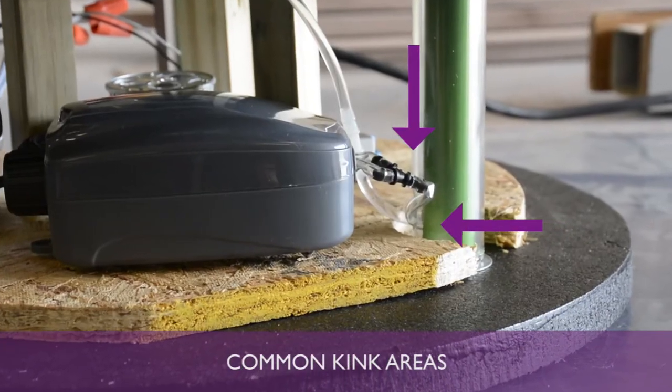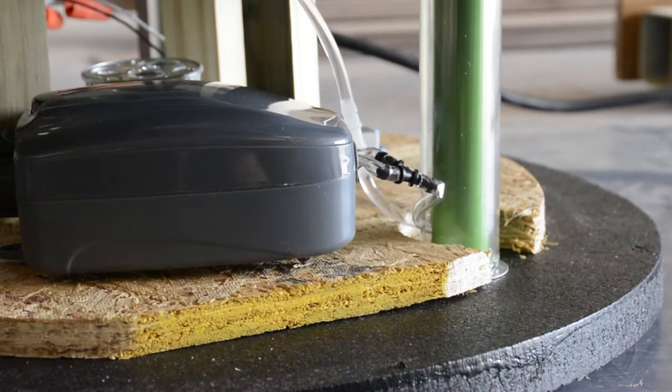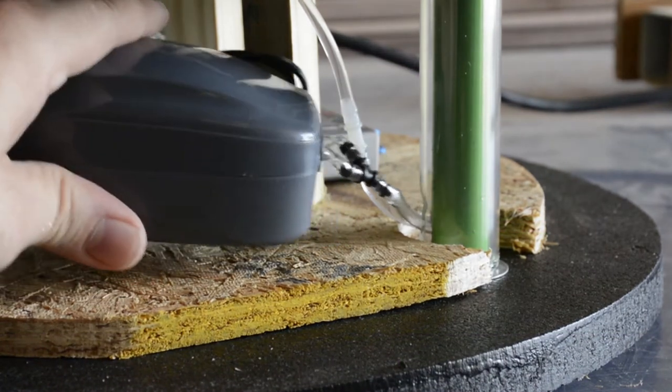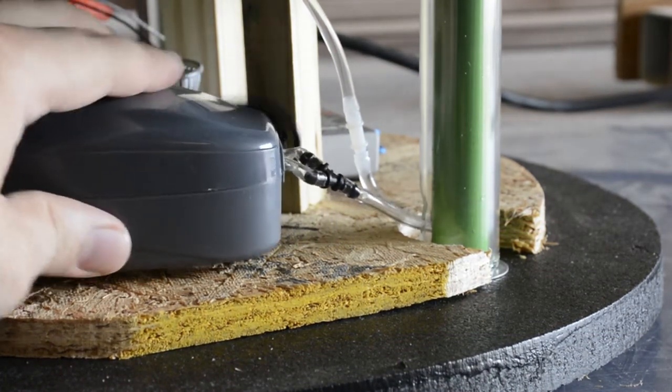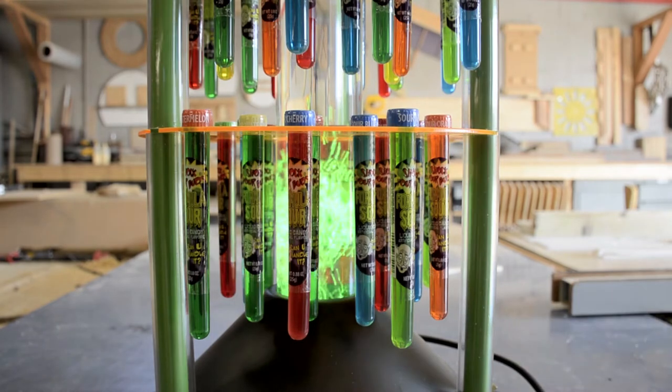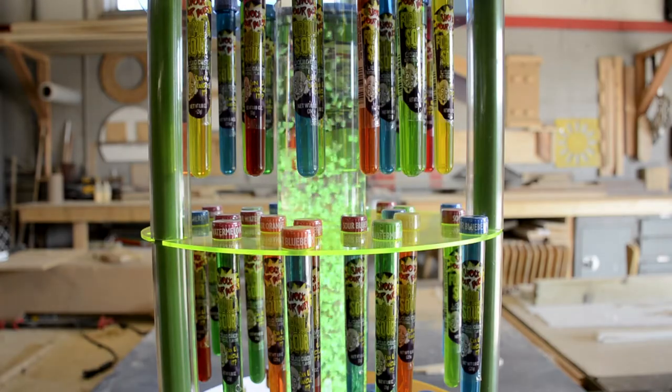Locate the air pump and examine the air lines for kinks. If you find a kink, go ahead and straighten it out. Plug your unit back in and turn it on and see if you have any bubbles. If so, great, you're done!